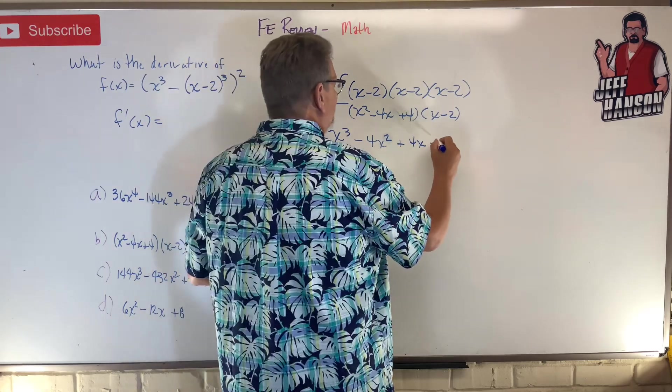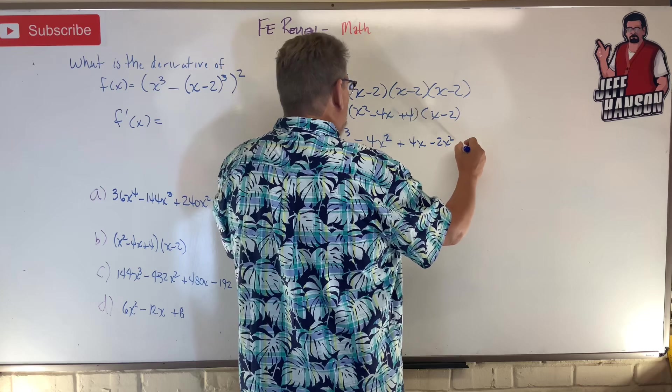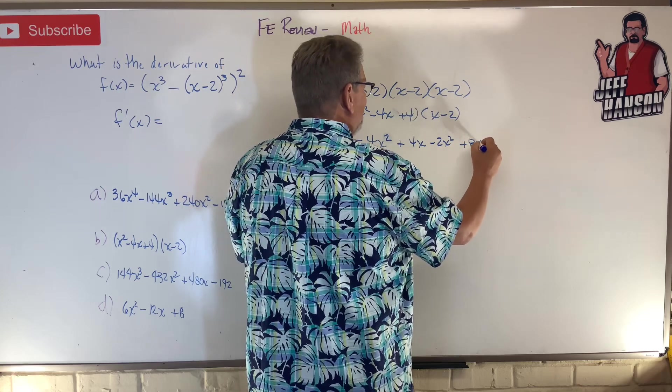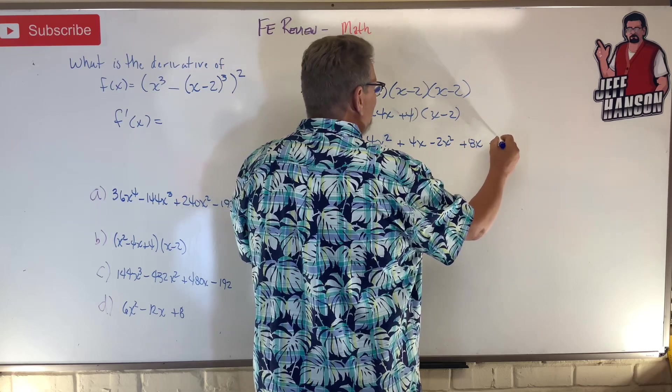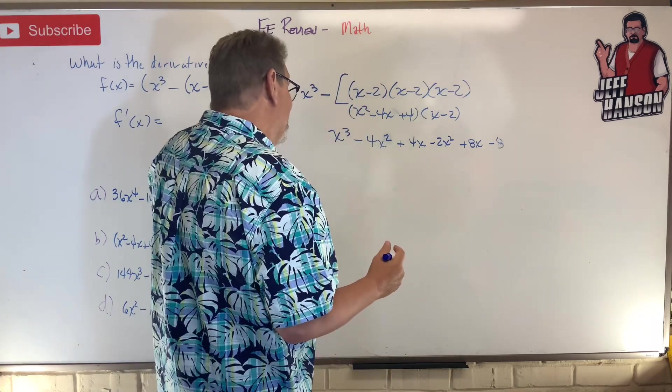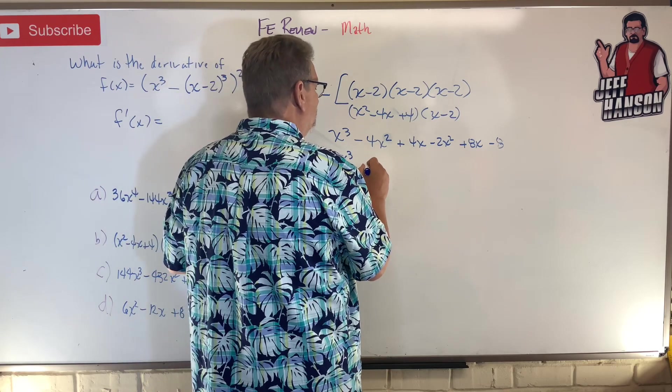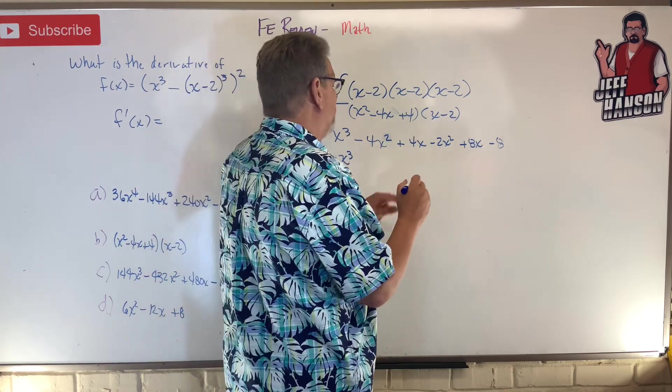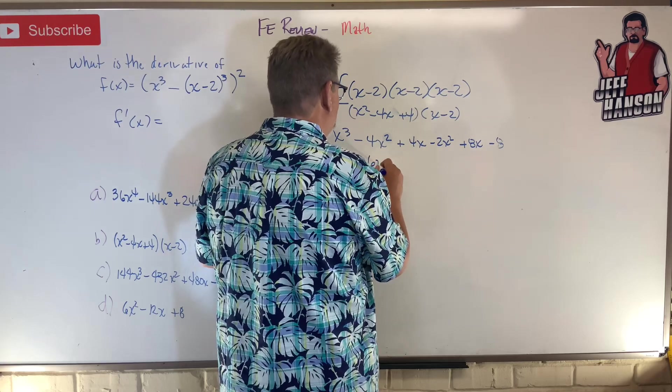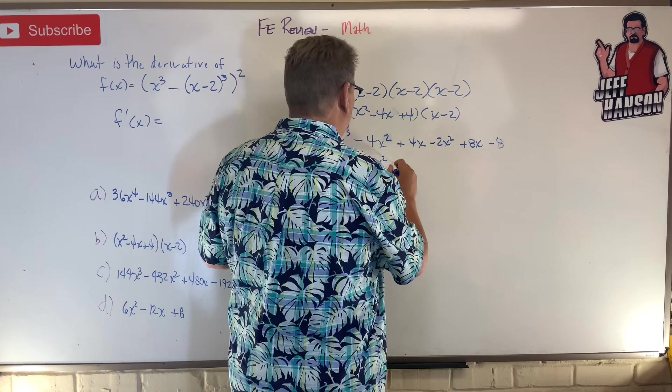Anything we can combine there? Well yeah. We can do x³. The x² I got a 4 and 2 there, so -6x², and then I got a 4 and an 8, so +12x and then of course -8.